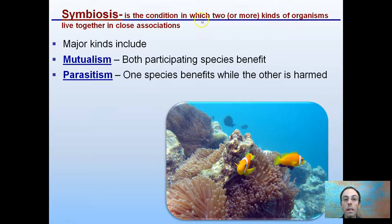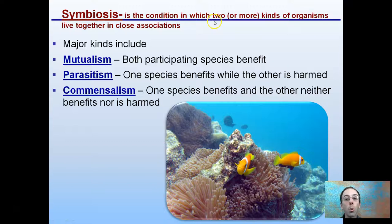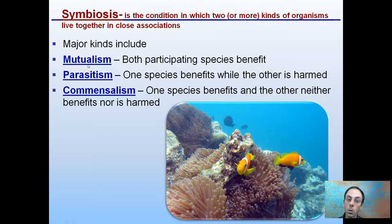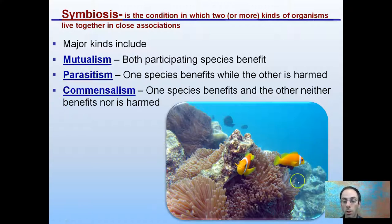Symbiosis is a condition in which two or more kinds of organisms live together in close association with one another. There are three different types we're going to go into in more detail. We could have our reefs here with fish and coral living together as an example.